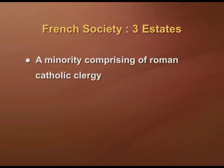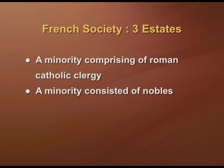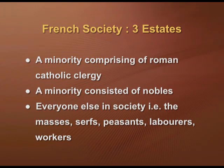The Ancient Regime, also called the old regime, was a social-political system which existed in most European countries during the eighteenth century. Countries were ruled by absolutism, meaning the monarch had absolute control over the government. French society was divided into three estates. The first estate was a minority comprising the Roman Catholic clergy. The second estate, also a minority, consisted of nobles. The third estate included everyone else — serfs, peasants, laborers and workers. The people of the first and second estates were privileged groups who did not pay taxes, while the masses of the third estate were unprivileged and paid heavy taxes and were exploited.